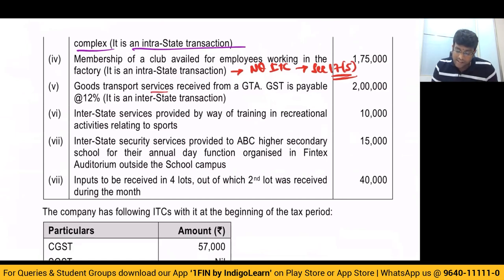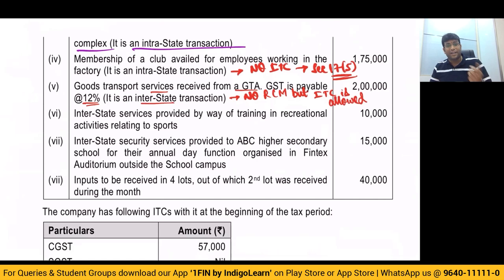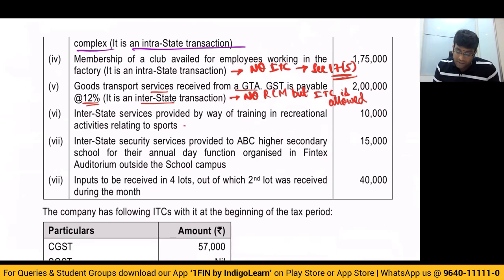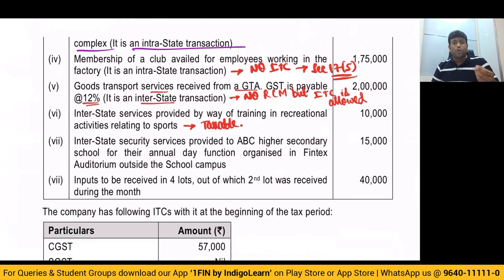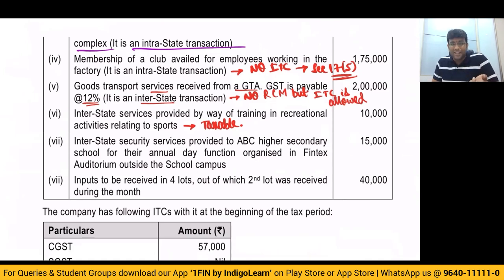GTA services received from GTA — GST is payable at 12%. When it is 12%, no RCM applies, but ITC is allowed. Interstate service provided by way of training in recreational activity related to sports — this will definitely be taxable, because exemption for training or coaching in recreational activity related to arts, culture, or sports is exempt only when it is provided by a charitable institution. In this case, this is not a charitable institution, so it becomes taxable and will attract GST at the rate of 18%.